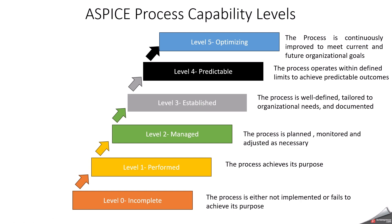Level 1 is named as performed, also called as basic process. The process is performed in an ad hoc and reactive manner. The basic activities are in place, but there is no consistency or long-term planning. The process may be carried out without clear documentation, but some level of activity and results are generated. However, it lacks systematic management and consistency.